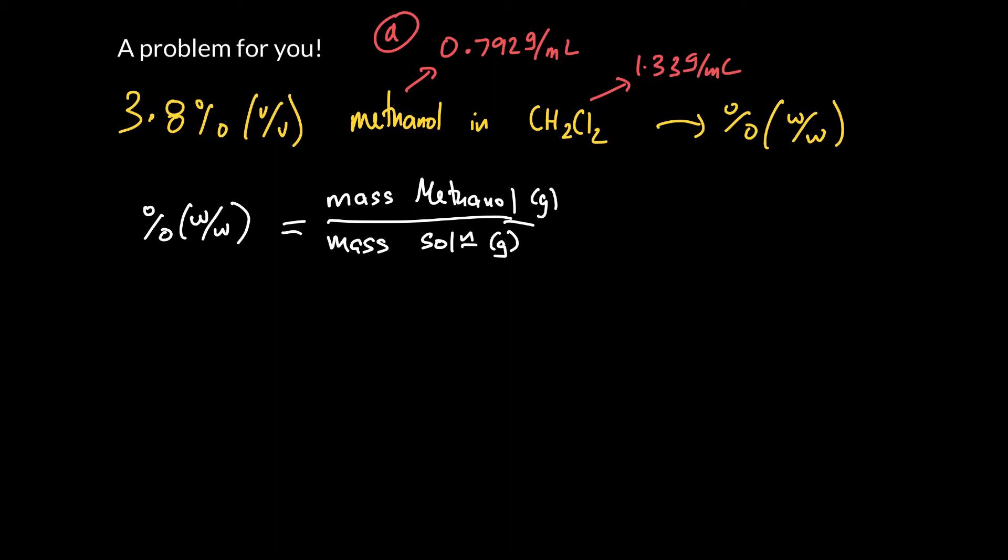All right, so we need these two things here. So we can take the 3.8% by volume as a conversion factor. And it's basically telling us there's 3.8 milliliters in 100 milliliters. So there's 3.8 milliliters of methanol in 100 milliliters of the solution.